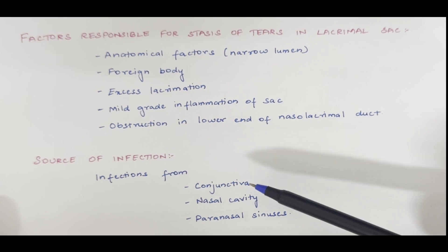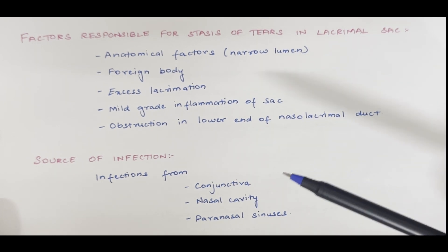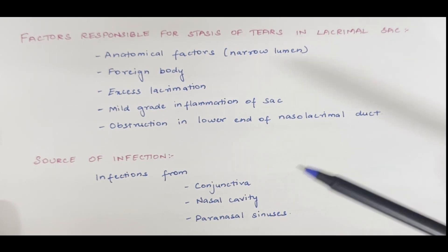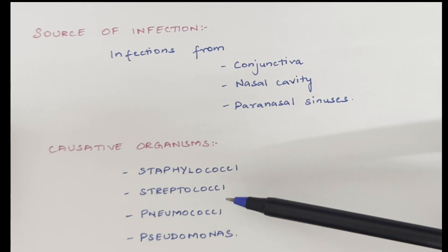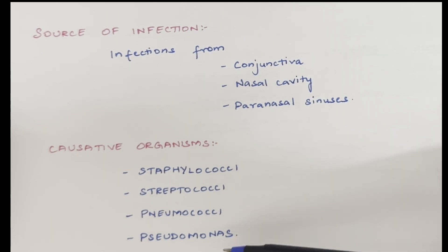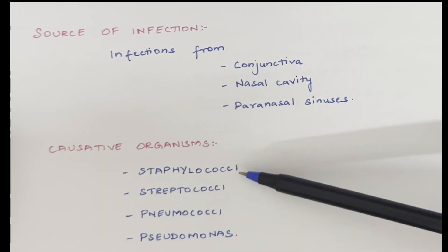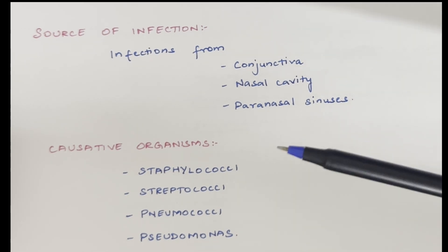Source of infection: when the conjunctiva is infected, it can cause lacrimal sac infection, also nasal cavity and paranasal sinuses. The causative organisms are staphylococci, streptococci, pneumococci and pseudomonas. We can see that coccus type of bacteria affect more.